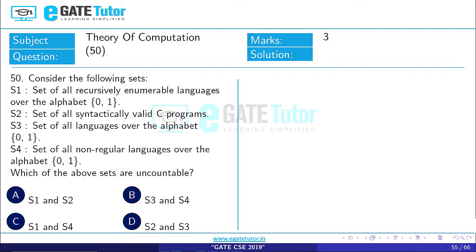S3 is the set of all languages over the alphabet {0, 1}. S4 is the set of all non-regular languages over the alphabet {0, 1}. Which of the above sets are uncountable?